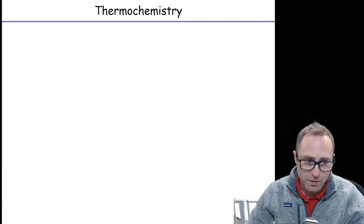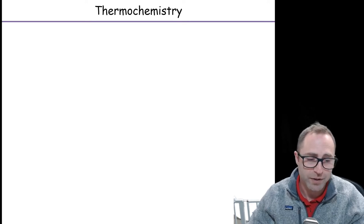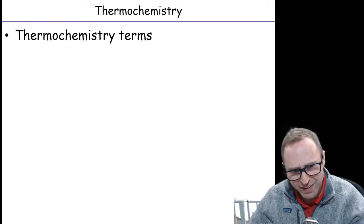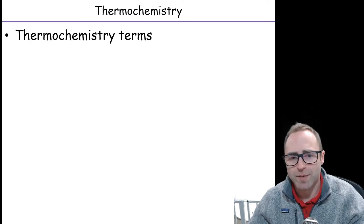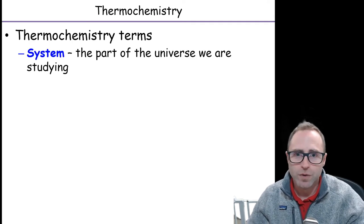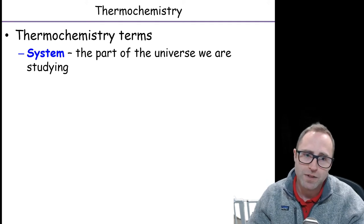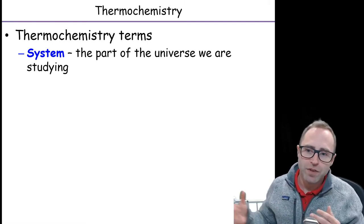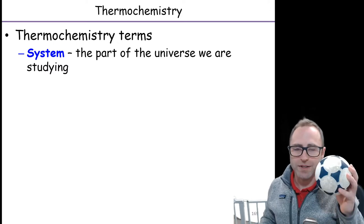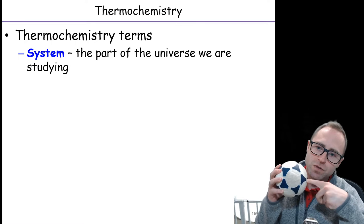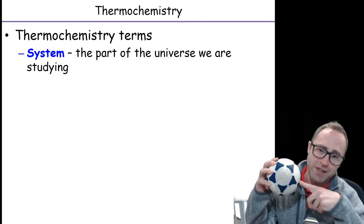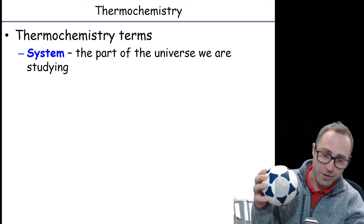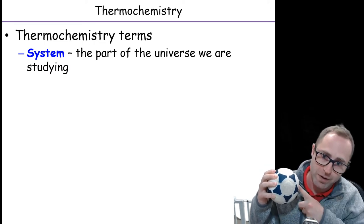Let's talk about some other terms. In thermochemistry, the system is the part of the universe that we're studying. Going back to our ball example, the ball is the thing we were studying, so of everything existent in the universe, that ball would be our system. Our surroundings technically are everything else in the universe — even Pluto is technically part of the surroundings. Typically when we talk about surroundings, we talk about the universe that has direct contact with the thing, so in this case, it would be the air right around the ball, and when we dropped it, it would be the table.